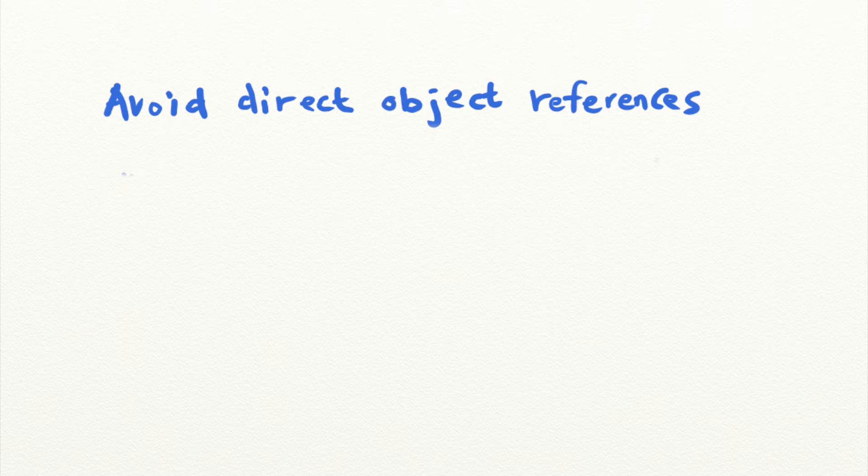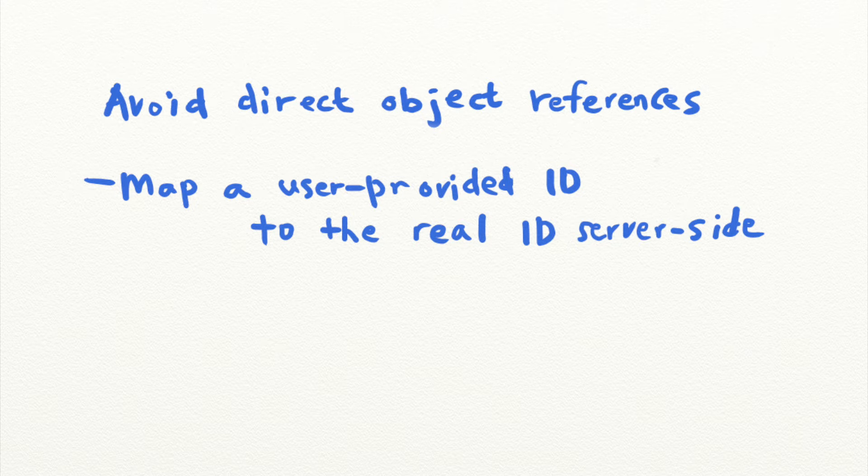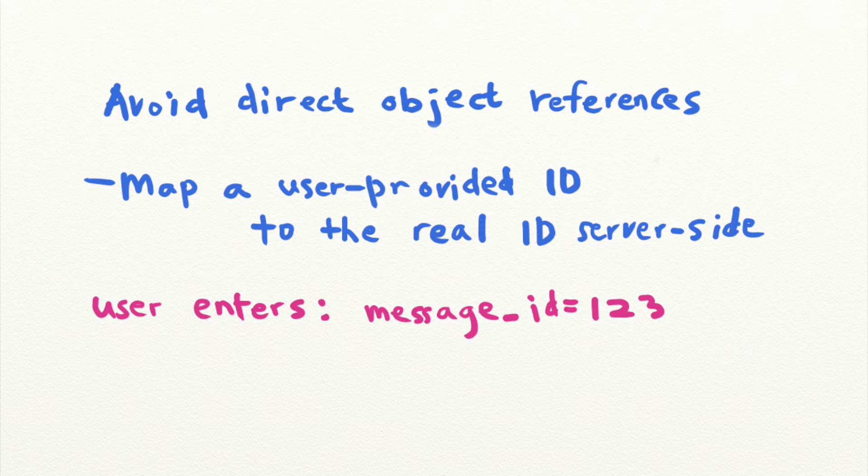For example, applications can map user-provided IDs to another object ID on the backend based on the user's session.